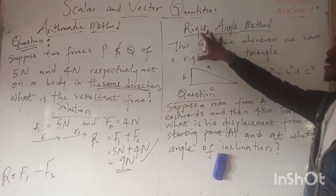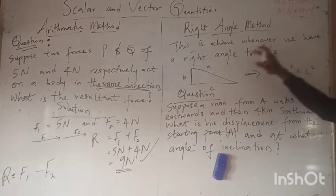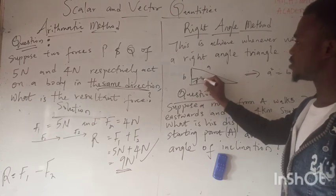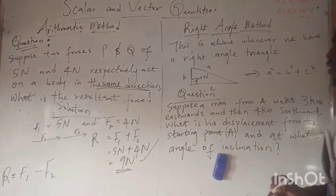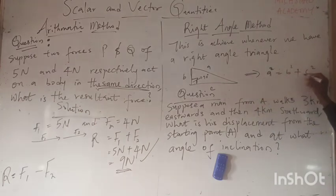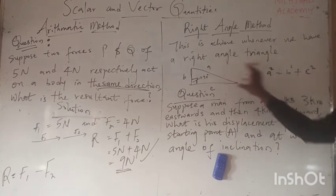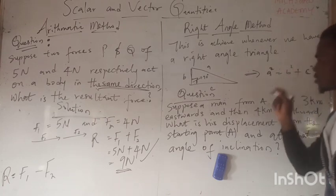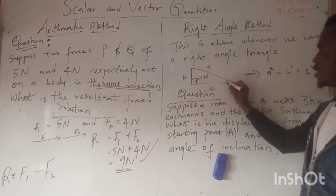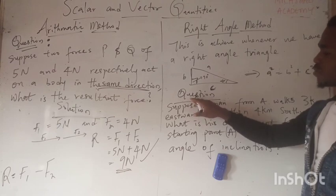The second method is the right angle method, which applies when we have a right angle triangle with a 90-degree angle. From the Pythagorean theorem: a² = b² + c². The longest side is the hypotenuse, and we identify the opposite and adjacent sides accordingly.